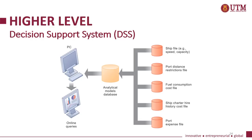This slide shows an example of a decision support system. In this example, the analytical model database takes five main data inputs: the ship file (for example, speed or capacity), the port distance restriction file, the fuel consumption file, the ship charter hire history cost file, and the port expense file. The analytical model database is then processed by a PC and made available for online queries.